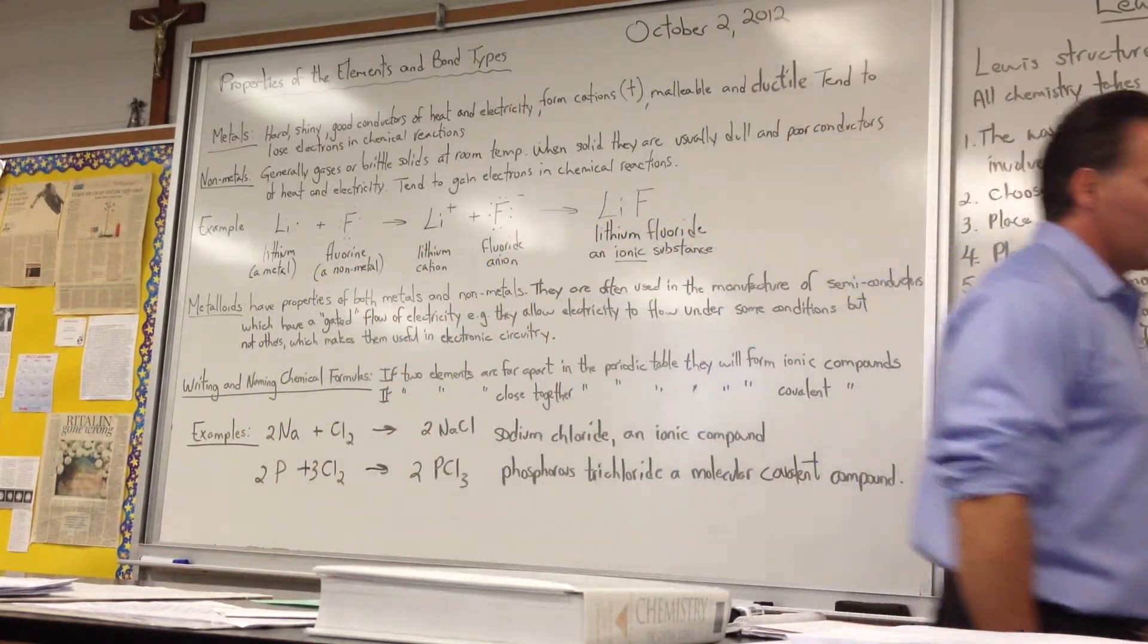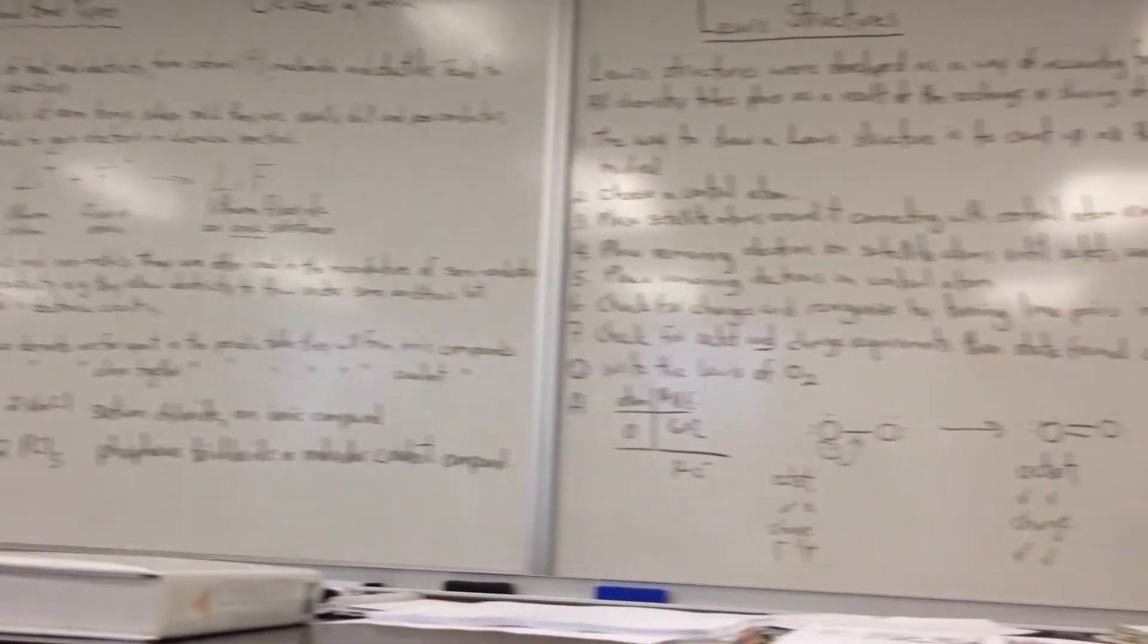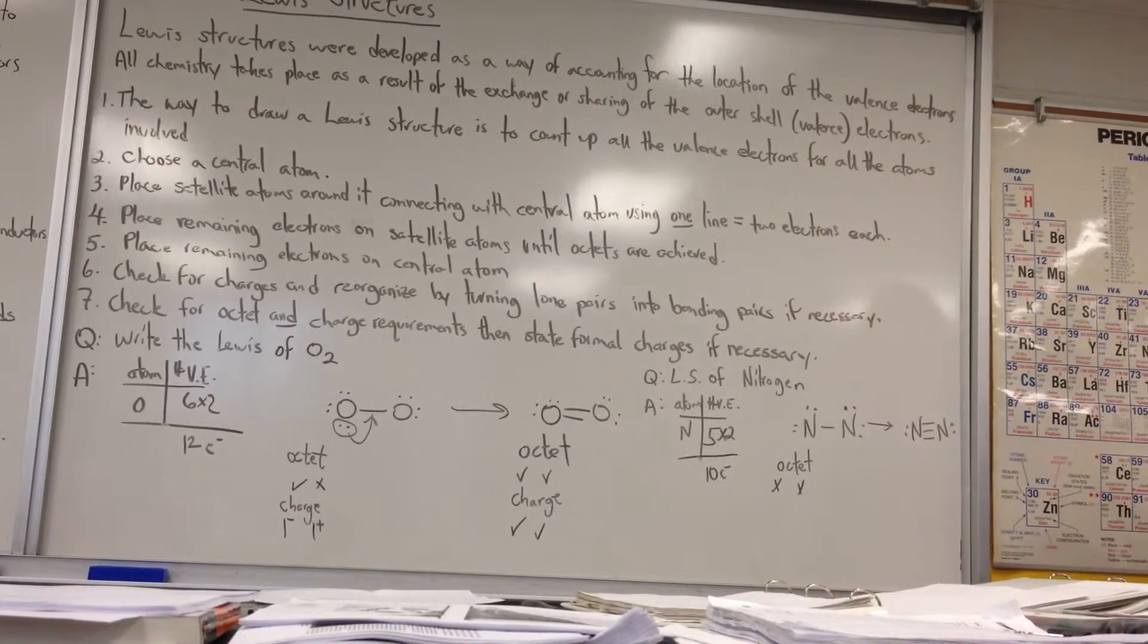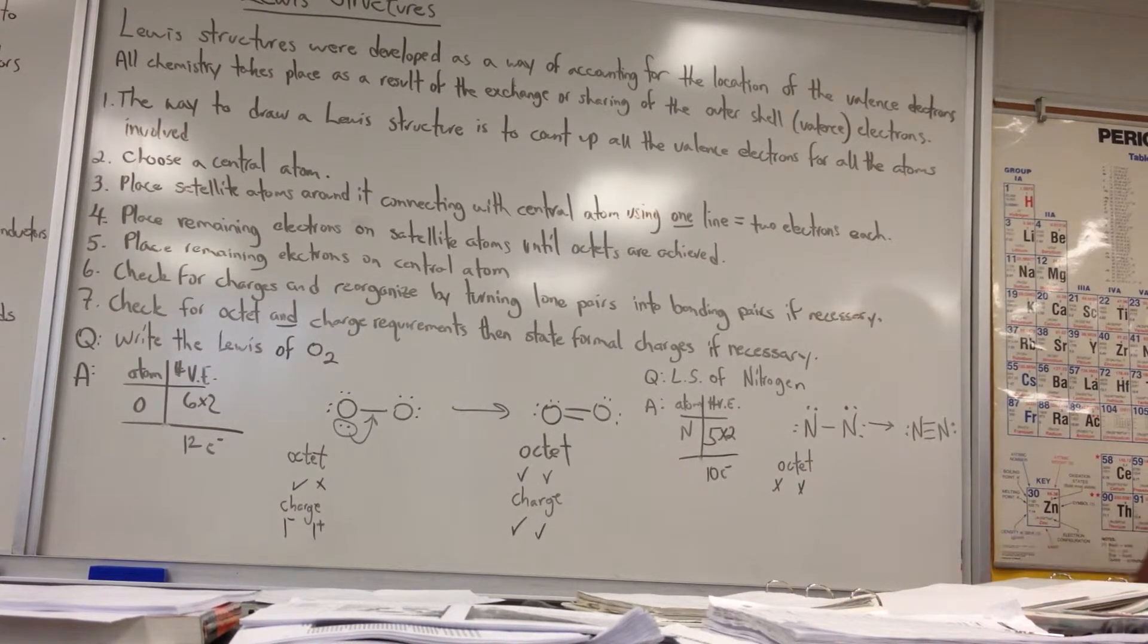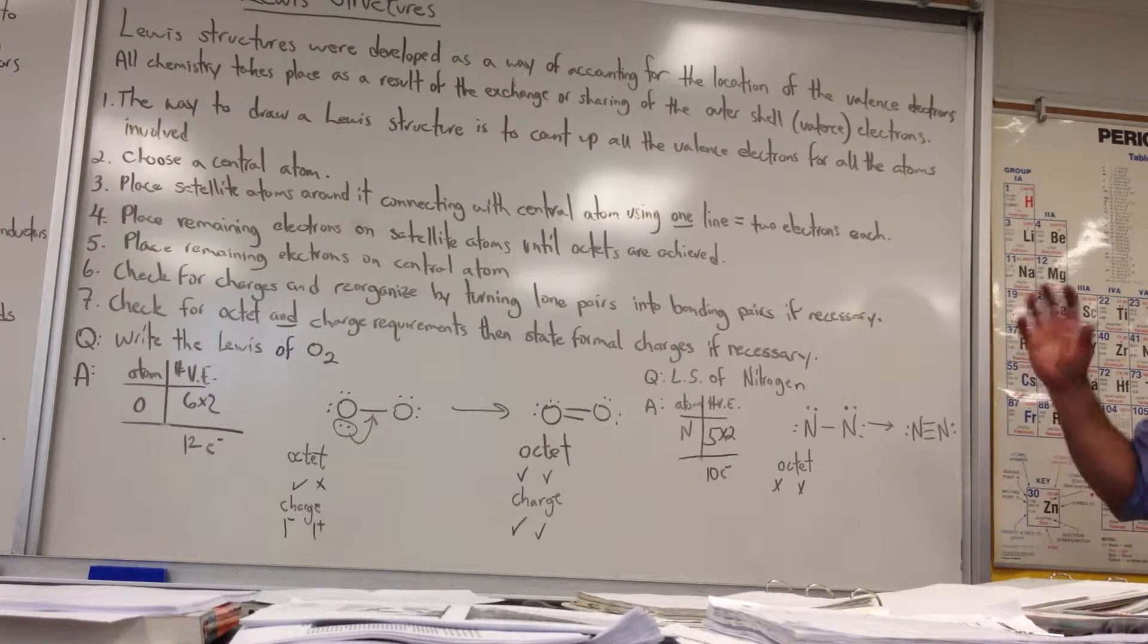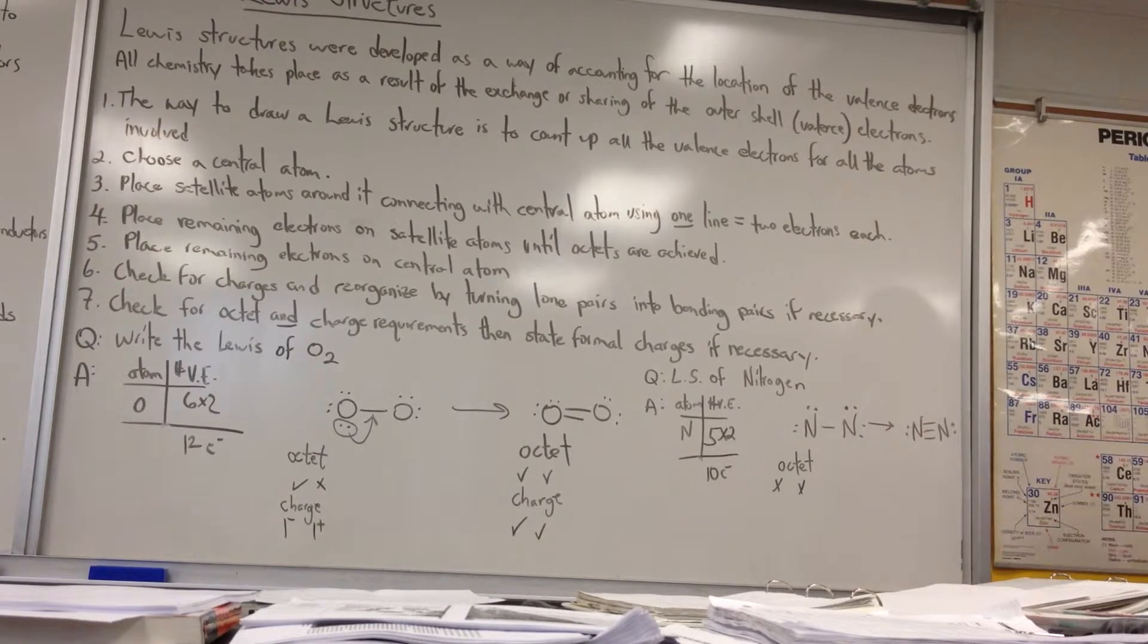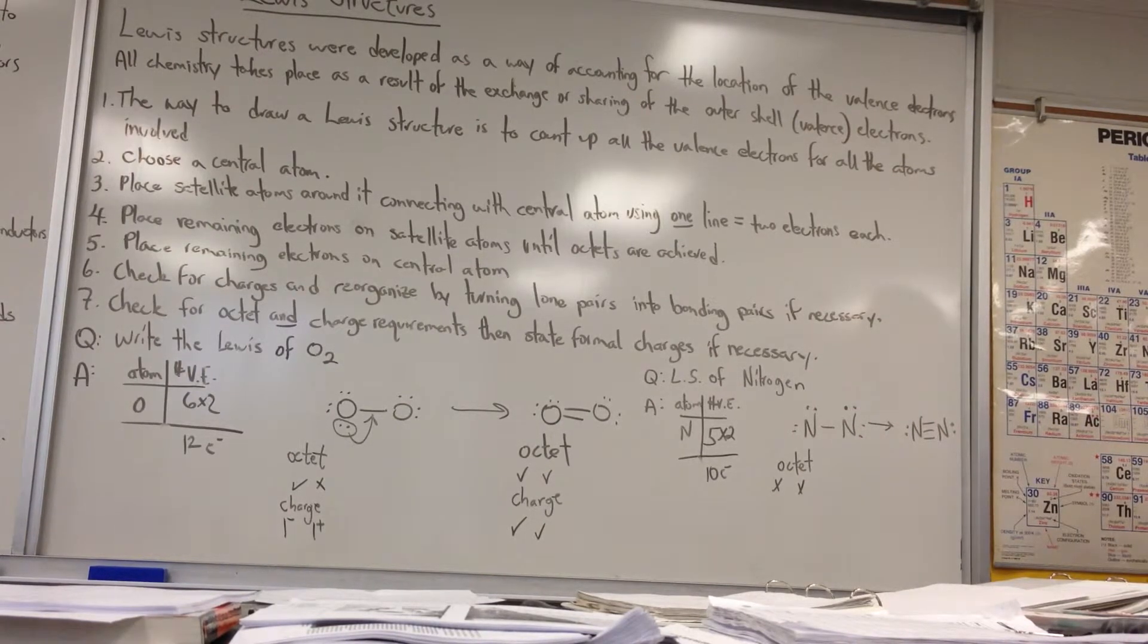Now, let's move on to the idea of Lewis structures. Lewis structures were designed as a way of accounting for the location of the valence electrons. All chemistry takes place as a result of the exchange or the sharing of outer shell electrons. They're called valence electrons. So, everything we call chemistry, all the chemical reactions, take place because the outer shell of electrons is either shared or lost to another atom. So, when an atom loses electrons, we call that oxidation. If an atom gains electrons, we call that reduction. We pick up on that in another chapter in electrochemistry.